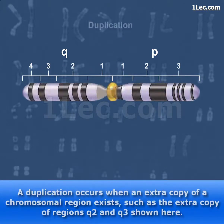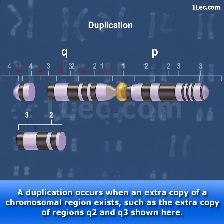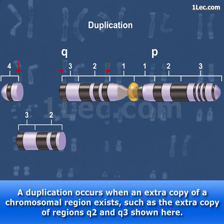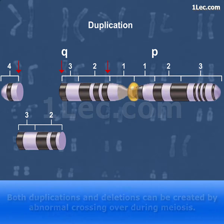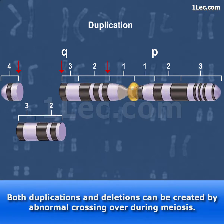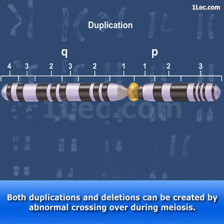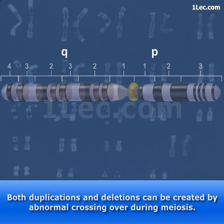A duplication occurs when an extra copy of a chromosomal region exists, such as the extra copy of regions Q2 and Q3 shown here. Both duplications and deletions can be created by abnormal crossing over during meiosis.